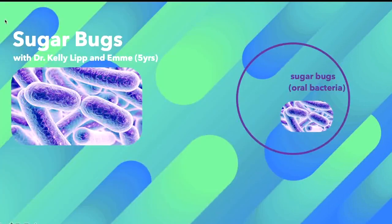Sugar bugs, also known as oral bacteria, are bugs that live in all of our mouths and are invisible. In the right environment, these bugs will eat holes in our teeth, also known as cavities. In order to get a cavity, these sugar bugs need three other things.